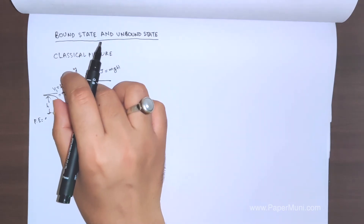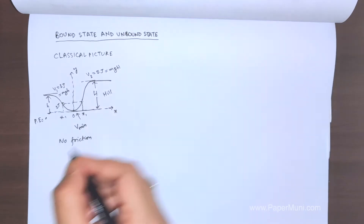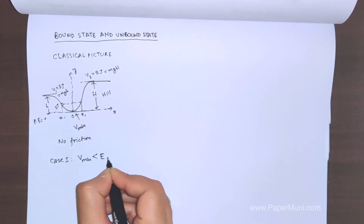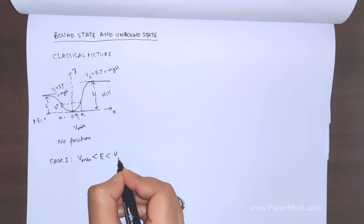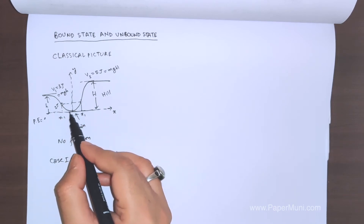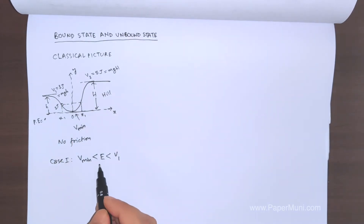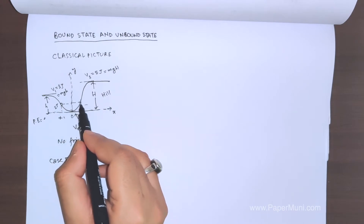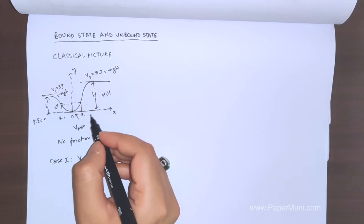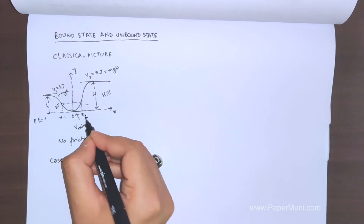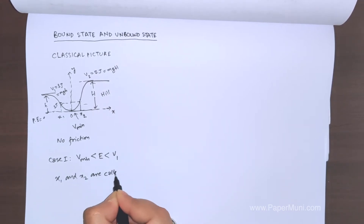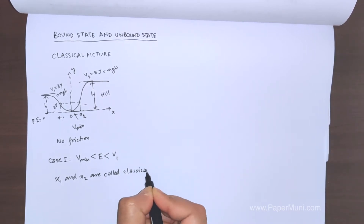Case one: if the energy lies between the minimum energy and this maximum energy — say it's two joules and the hill is three joules — whenever you leave the ball it will go to one point, then return to the other point. The ball will not go beyond these two points. We call these x1 and x2, which are the two classical turning points.